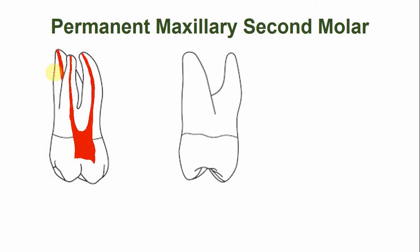This is the buccolingual outline of the permanent maxillary second molar. The mesio-buccal and mesio-lingual pulp horns are well developed, and the dimension of the pulp chamber is quite wide buccolingually. In the maxillary second molar, the canal is usually single in the mesio-buccal root, but sometimes a second mesio-buccal canal, or MB2 canal, is also present.